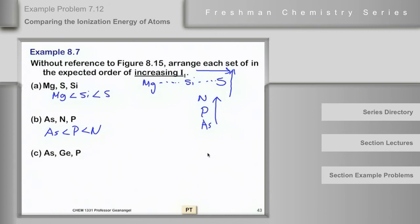Okay, then let's look at arsenic, germanium, and phosphorus. If we look at the periodic table, we'll see that germanium is to the left of arsenic, and arsenic is below phosphorus, and silicon is over here, it's not in the game.